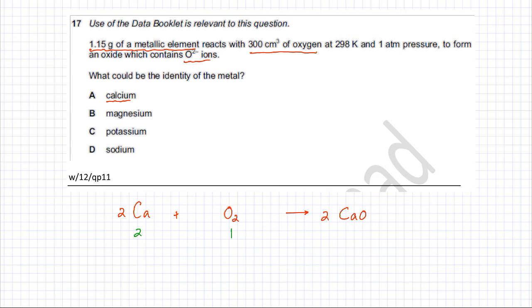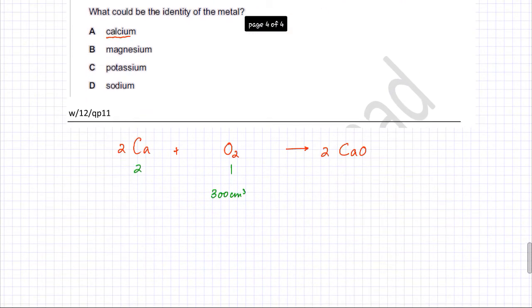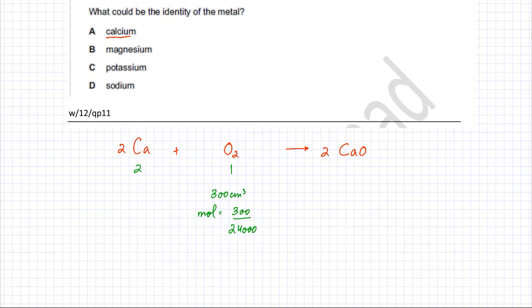The way this question is solved: if the information provided fits this 2:1 ratio, then this equation is correct. Starting with 300 cm³ of oxygen gas, we find the moles of oxygen using the formula that one mole of gas occupies 24,000 cm³. So moles of oxygen = 300 ÷ 24,000.